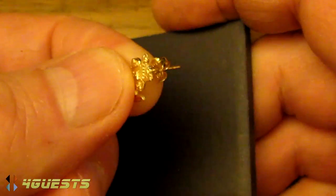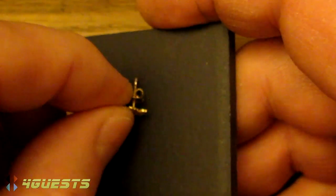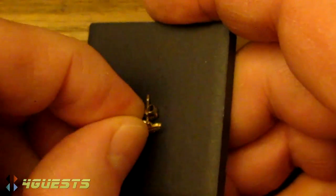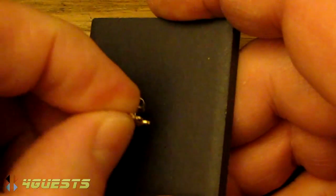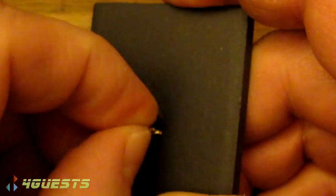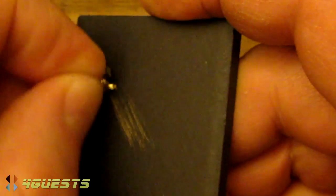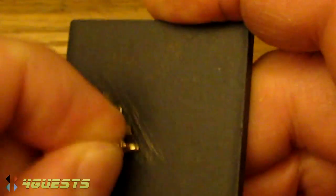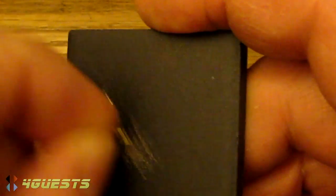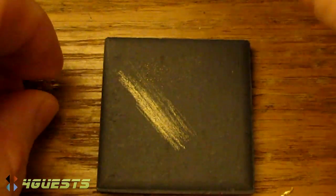So I deem this bullion gold for 14 karat. We're going to take it and scratch ourself a good line there. We've got plenty of gold to test.